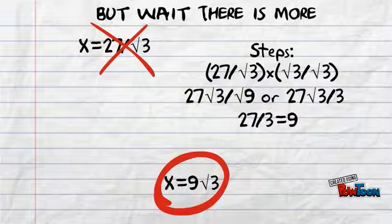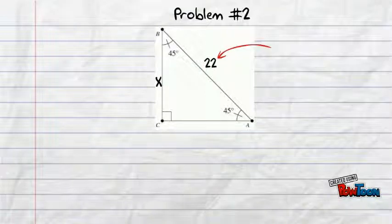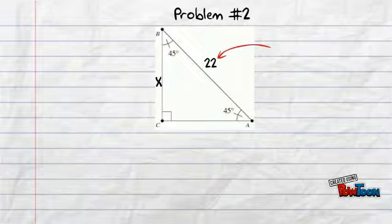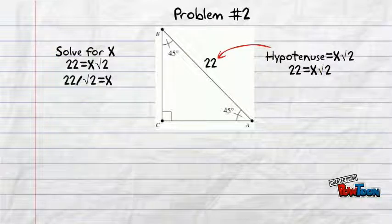Let's do another. In this problem, we are given the hypotenuse and have to find the original x value. Well, the hypotenuse formula on a 45-45 triangle is x square root 2, and our value is 22. So, let's solve for x. We divide both sides by root 2.